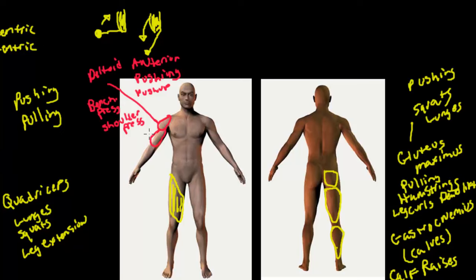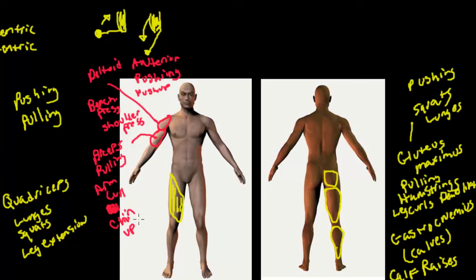Let's talk about the biceps — it's a pulling muscle. An arm curl would work out the biceps. A chin-up would also work it, since in a chin-up your palms are facing towards you, which puts the arm in the appropriate position to use the biceps.